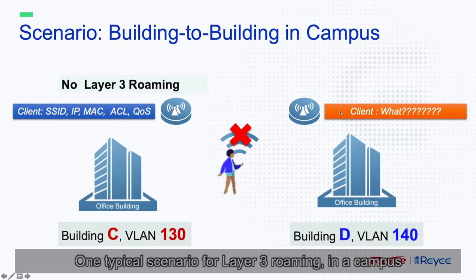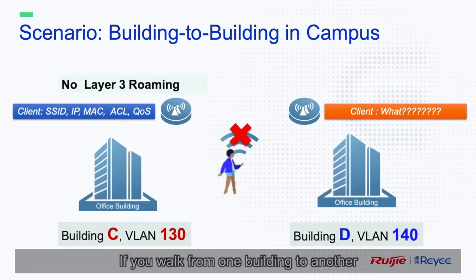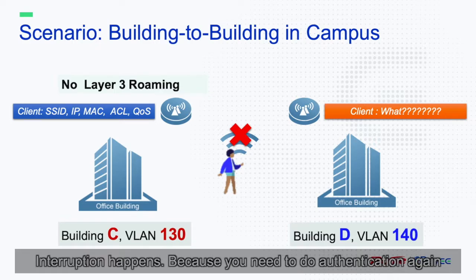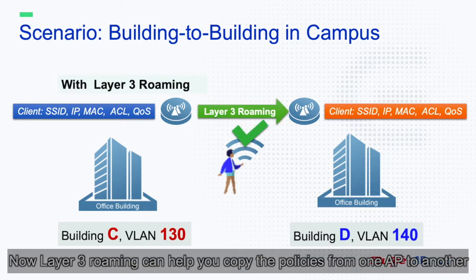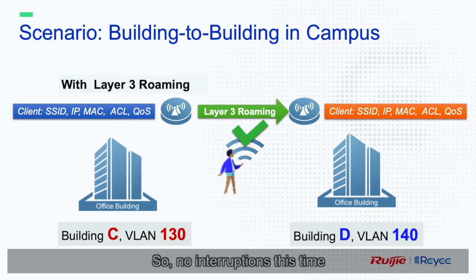One typical scenario for Layer 3 roaming is in a campus. If you walk from one building to another, you will switch from VLAN 130 to VLAN 140. Interruptions happen because you need to authenticate again. Now, Layer 3 roaming can help you copy the policies from one AP to another, so no interruptions this time.